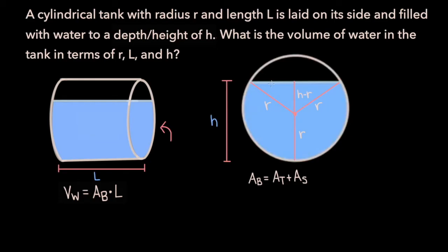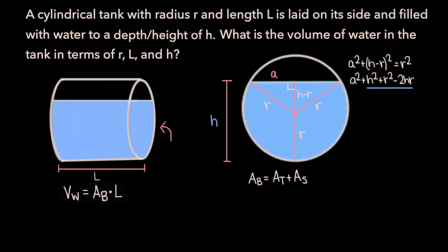Imagine we split this larger triangle into two separate right triangles. We can use the Pythagorean theorem to calculate the length of one leg, which we call a. The base of the larger triangle will be 2a. Applying the Pythagorean theorem: a squared plus (h minus r) squared equals r squared. Expanding: a squared plus h squared plus r squared minus 2hr equals r squared. Canceling r squared from both sides and rearranging, we get a squared equals 2hr minus h squared.